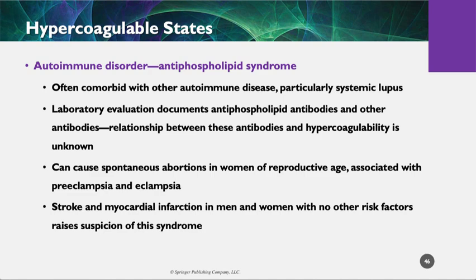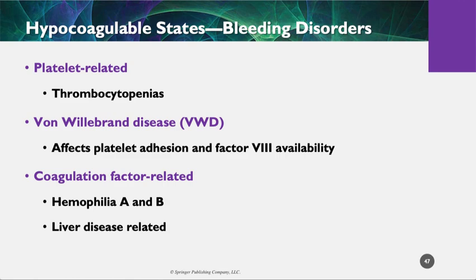There are also autoimmune disorders like antiphospholipid antibody syndrome. There are thrombocytopenias — remember when the platelet count is low, that decreases the ability of the blood to clot because you don't have the stuff to start forming the clot. Platelet aggregation is the first step. There's also von Willebrand's disease, where there's a deficit or defect in the adherence of platelets to the vascular wall. Von Willebrand factor is not present in sufficient quantities or doesn't work properly, and that prevents platelet adhesion.